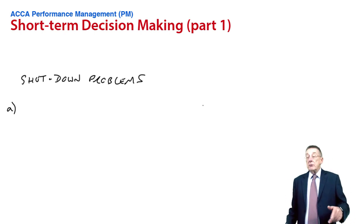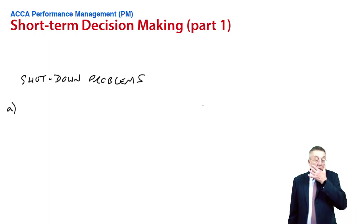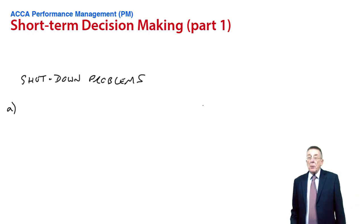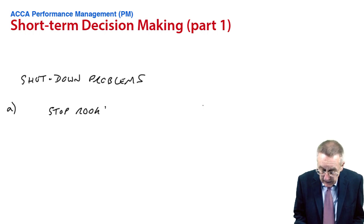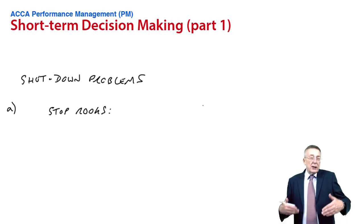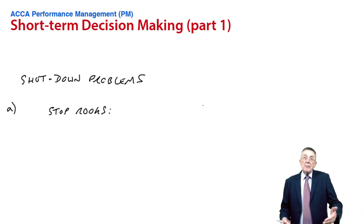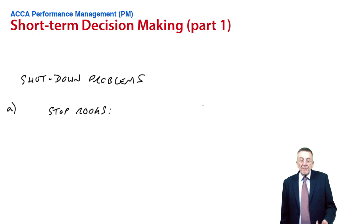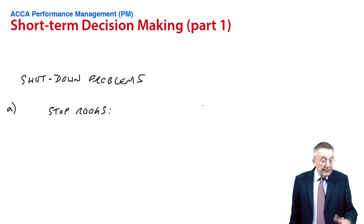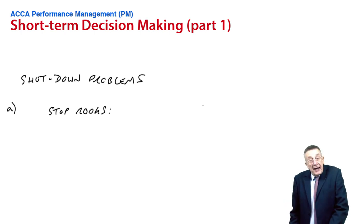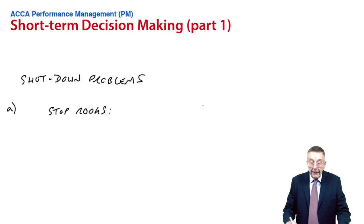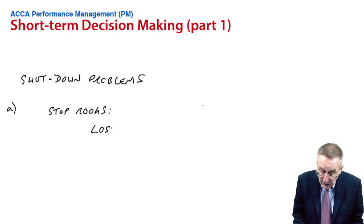Let's make the decision. There are several ways you could go about making the decision. What's going to happen if we stop rooks? Clearly, stopping rooks we lose that sales revenue of 40,000, but we save the variable costs of 25,000 because we're not producing. And so we would lose the contribution.